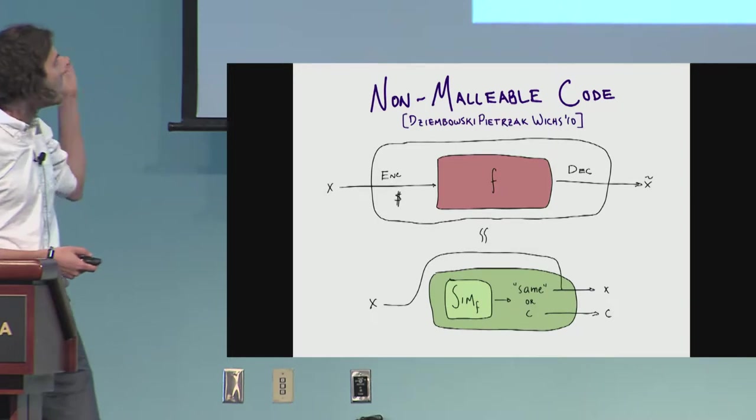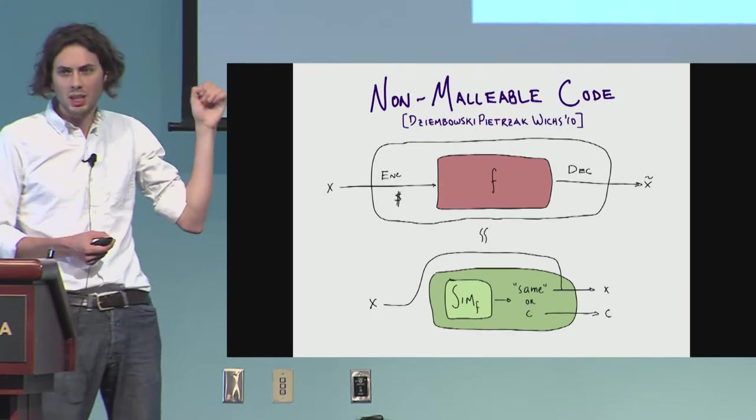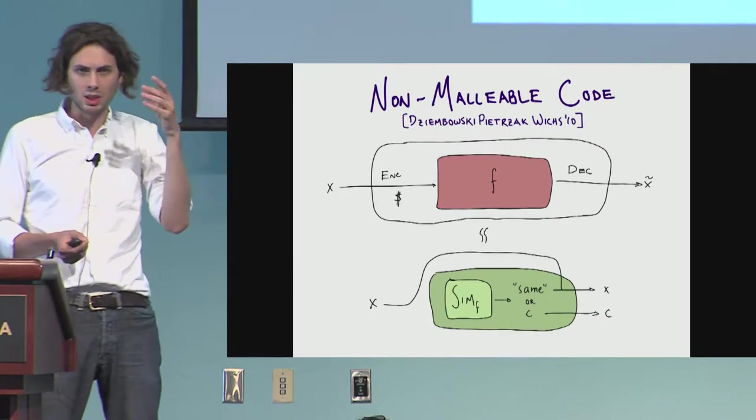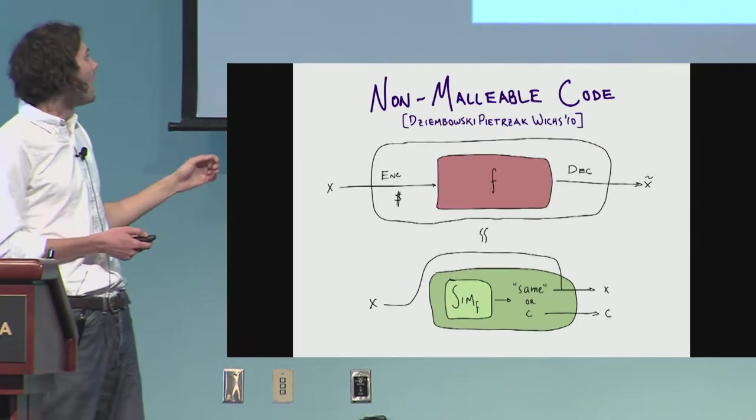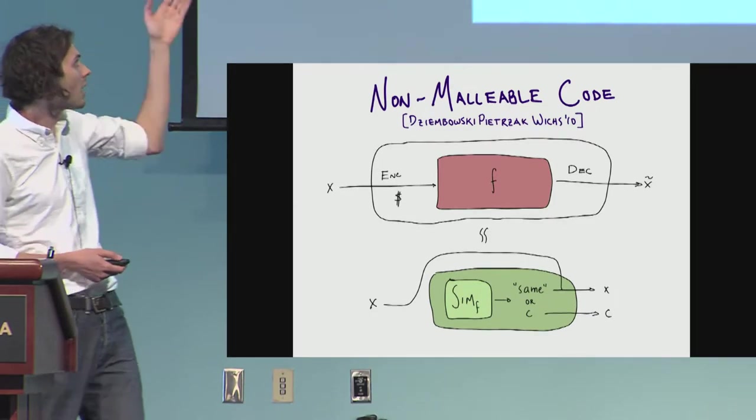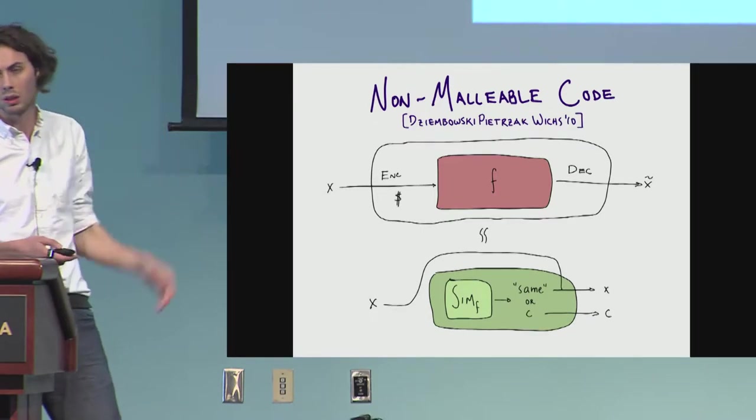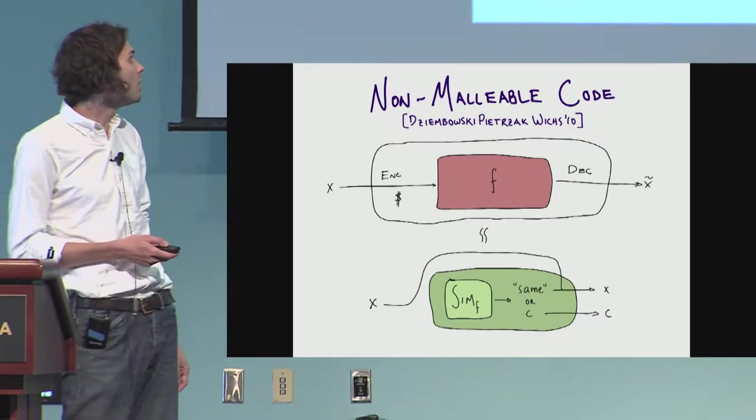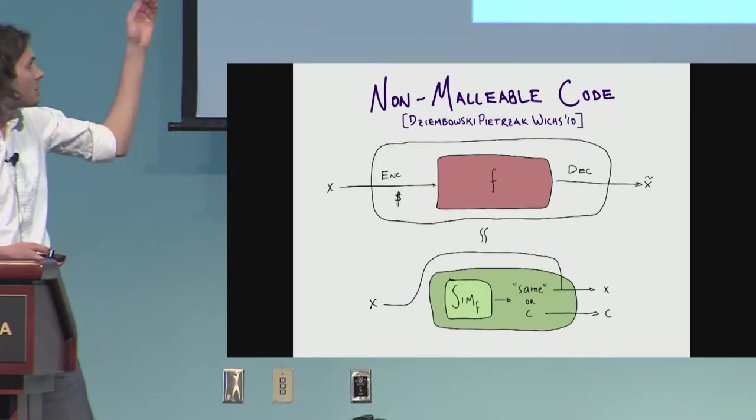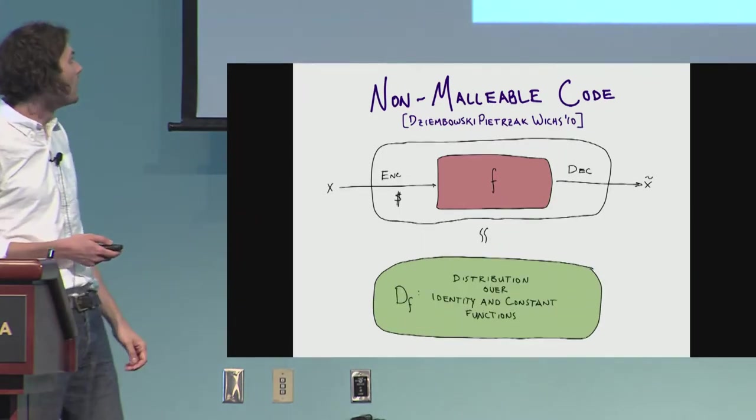We want to say that this simulator, if we wrap the simulator and whenever we see the symbol same, we replace it with X, otherwise we just send through the message at output. And we want that this distribution should be statistically close to the output of the distribution above. This gives you this sort of ideal real-world paradigm we're familiar with in cryptography.